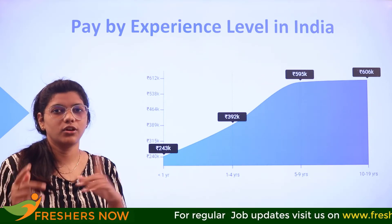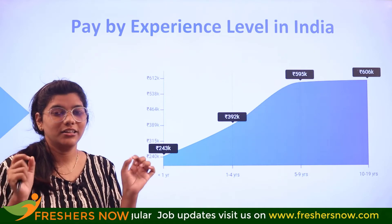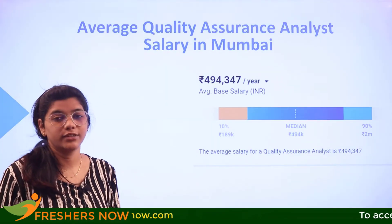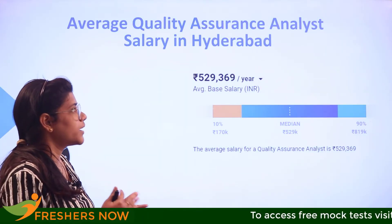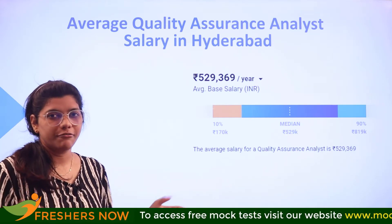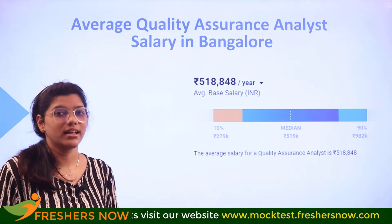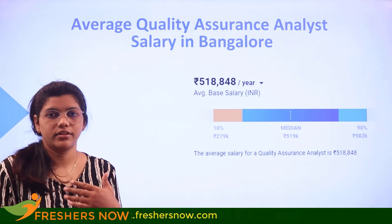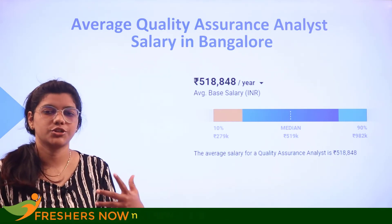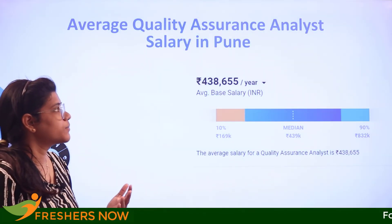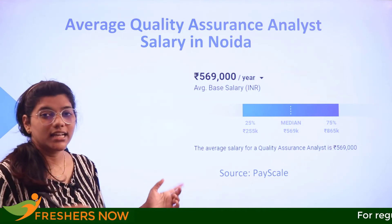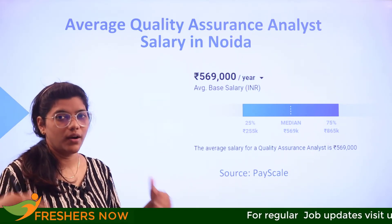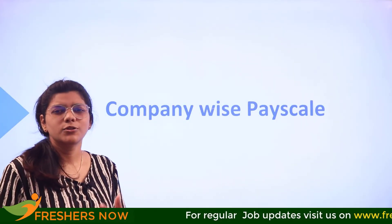Now stepping into the major part of the video: how each location pays. If you belong to any of the places mentioned, make sure you have a high demand for your skills and a strong profile before stepping into the career. Mumbai offers 4,94,000 per annum; Hyderabad is 5,29,000 per annum, crossing the average; Bangalore is 5,18,000 per annum — a very good start. This pay can vary for beginners, mid-level, or experienced candidates depending on the organization. Pune is 4,38,000 and Noida is 5,69,000 per annum. It always depends on the place, company, and the value you bring to the organization.